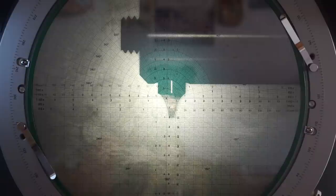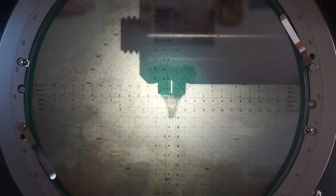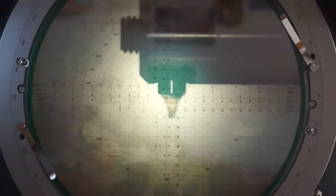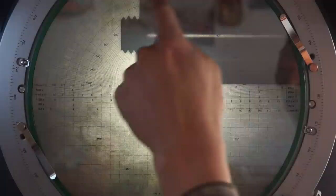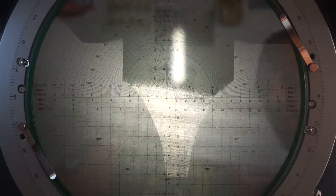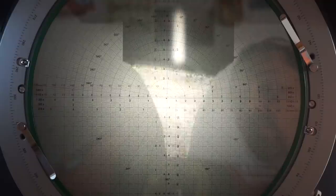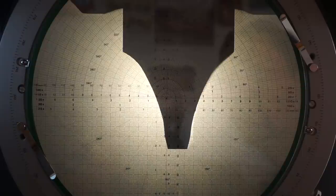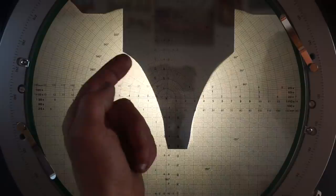Okay guys, we are here at the profile projector, also known as shadow graph, in order to check the shape of the single point insert that we just ground. We are looking down at the single point insert and we are using top light at the moment. This is the single point insert we just ground, already mounted in the boring bar. Let me go to a higher magnification. This is 20 times magnified. While looking down at the surface is quite interesting in terms of checking the surface roughness, we will switch to the backlight feature.